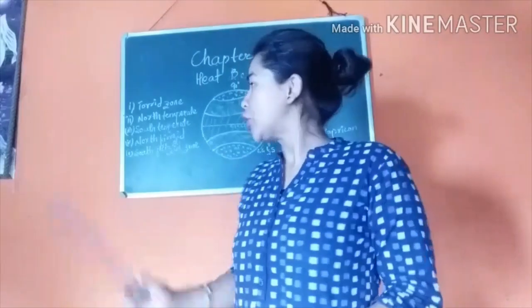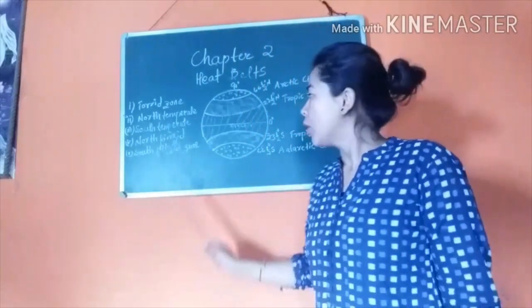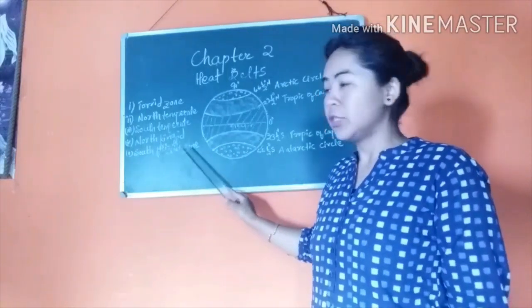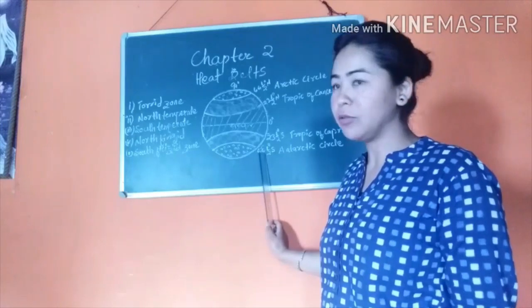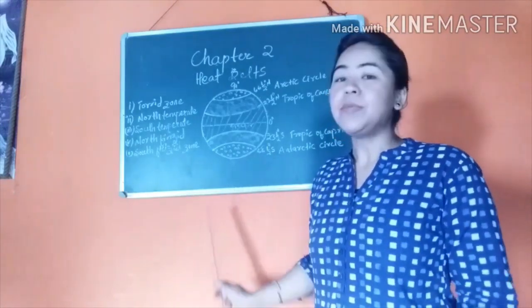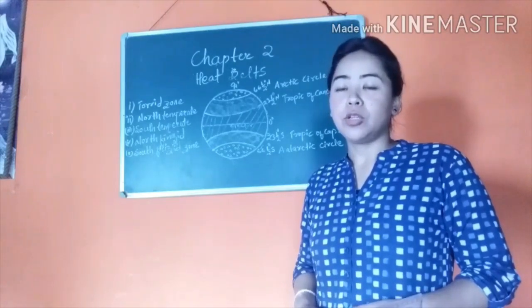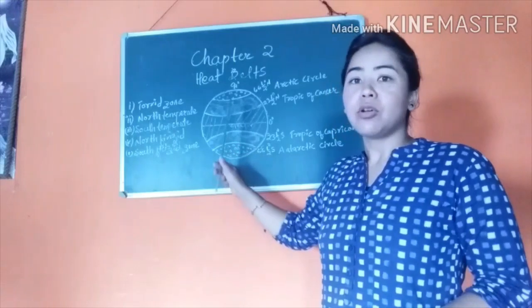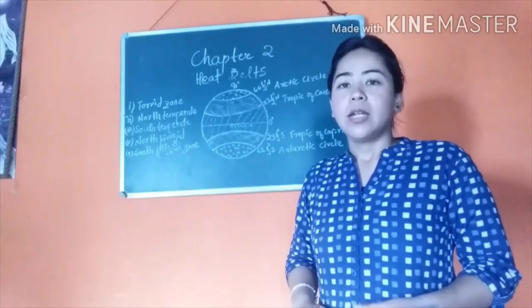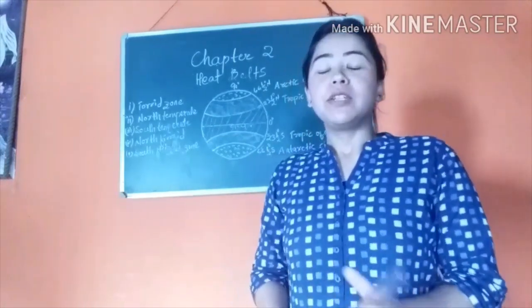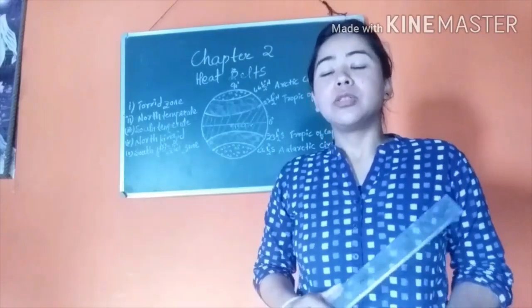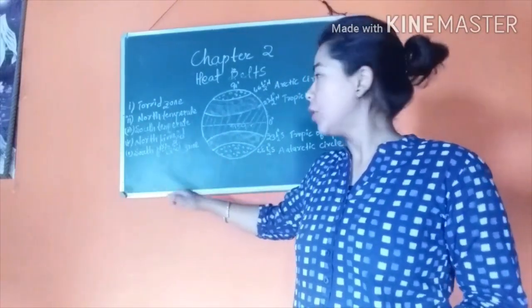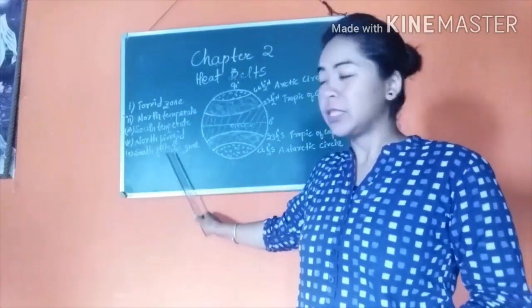The last zones are the frigid zones — there are two: the north frigid zone and the south frigid zone. The north frigid zone lies above the Arctic Circle (66.5° North), towards the North Pole, and the south frigid zone lies below the Antarctic Circle (66.5° South), towards the South Pole. As the name indicates, the frigid zone is the coldest zone of the world as it receives oblique rays from the sun. The temperature remains frozen throughout the year, with an average temperature of 10°C to -40°C. In today's class we learned about heat belts — the five heat belts: torrid zone, north temperate zone, south temperate zone, north frigid zone, and south frigid zone.